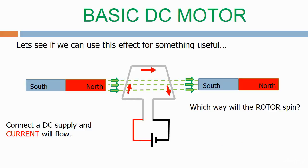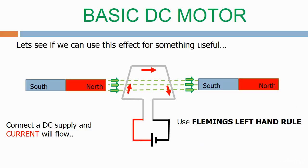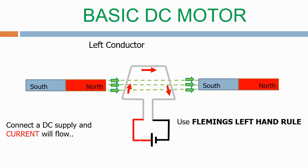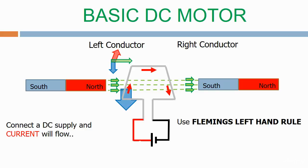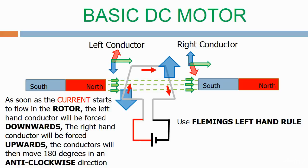Which way will the rotor spin? Use Fleming's left hand rule. First we label the left hand side of the rotor the left conductor, and the right hand side of the rotor the right conductor. Using Fleming's left hand rule on the left conductor: the current is going upwards, the magnetic field is going left to right, therefore the left hand conductor moves downwards. For the right conductor, the magnetic field is still going left to right, but now the current is moving downwards, therefore the right hand conductor moves upwards. As soon as the current starts to flow in the rotor, the left hand conductor will be forced downwards, the right hand conductor will be forced upwards, and the conductors will then move 180 degrees in an anti-clockwise direction.